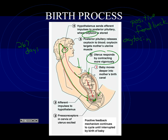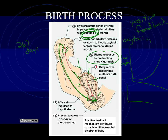The uterus responds by contracting — it squeezes, and the baby's head gets pushed farther down. That makes more pressure on the cervix. More pressure on the cervix leads to more nerve impulses to the brain. More nerve impulses leads to more oxytocin, and more oxytocin means more muscle contraction. If you graph oxytocin over time, it keeps rising. The graph for contraction strength and speed mirrors it. The contractions happen faster and faster and harder and harder, and what they're doing is squeezing the baby out.